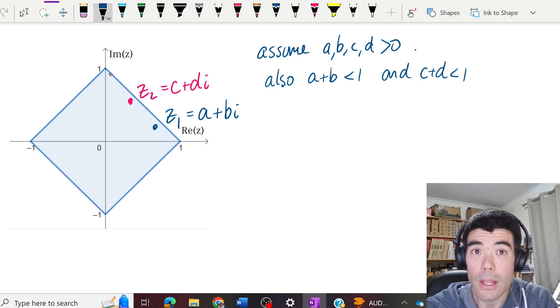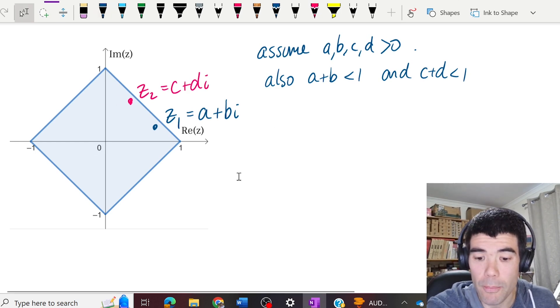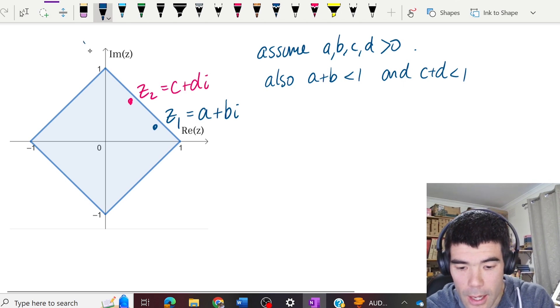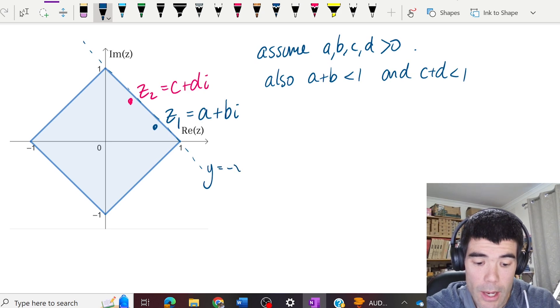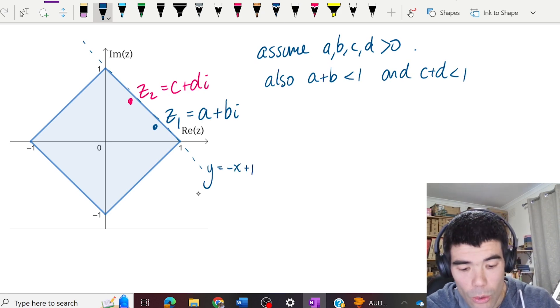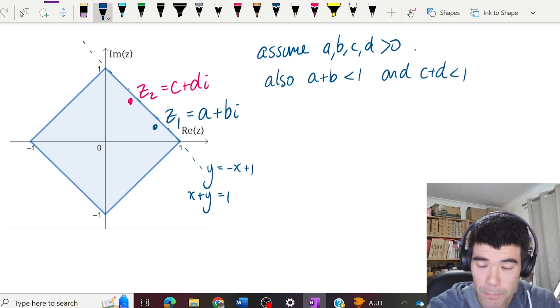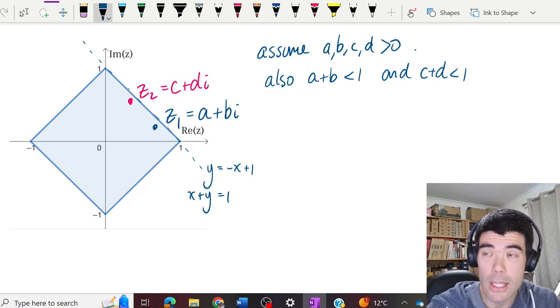Also, we can know that a plus b is less than 1, and c plus d is less than 1. Why is that? Because we know that these points are within this square or this triangle here. And if we look at this line, this line would have the equation y equals negative x plus 1, or x plus y equals 1. If we know that we're below this line, we know that x plus y is less than 1.